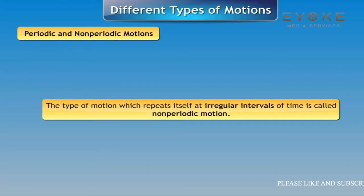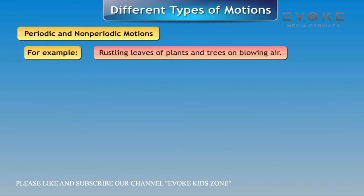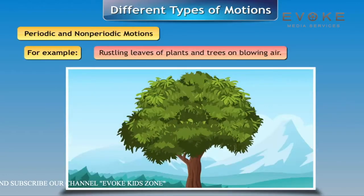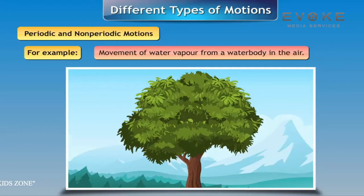The type of motion which repeats itself at irregular intervals of time is called non-periodic motion. For example, rustling leaves of plants and trees on blowing air and movement of water vapor from a water body into the air.